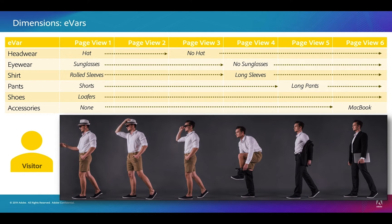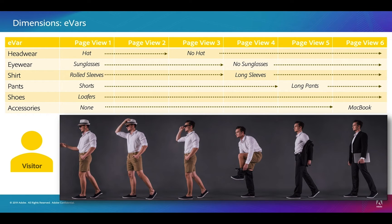If you watched the video about conversion variables or EVARs, you'll remember the analogy about the guy changing clothes. As EVARs are persistent, they are waiting for an event to happen so they can get credit for something. In the pants report, you have shorts for a while and then long pants. So if an event happened on page three — say it's a sign in — the credit for that event would go to shorts, because the value shorts persisted from page one in that EVAR. Events give credit to any EVARs that have values associated with them.